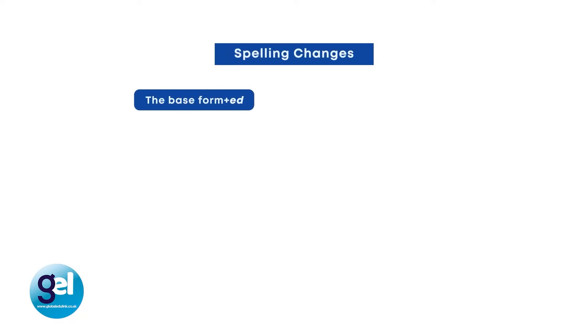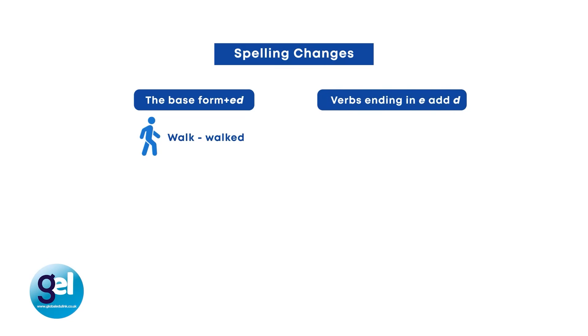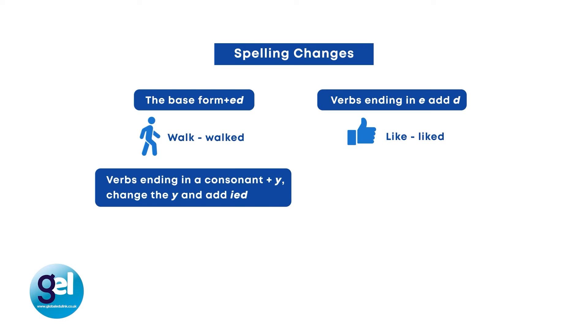Watch out for the problems with ED verbs. One of the main problems is spelling, as it's not just as simple as adding ED to the base form. There are spelling rules and changes which need to be learned and applied. With the base form we add ED — so 'walk' becomes 'walked.' However, verbs ending in E just add D, so 'like' becomes 'liked' and 'move' becomes 'moved.' For verbs ending in a consonant plus Y, we change the Y and add IED — so 'carry' becomes 'carried,' 'cry' becomes 'cried.'